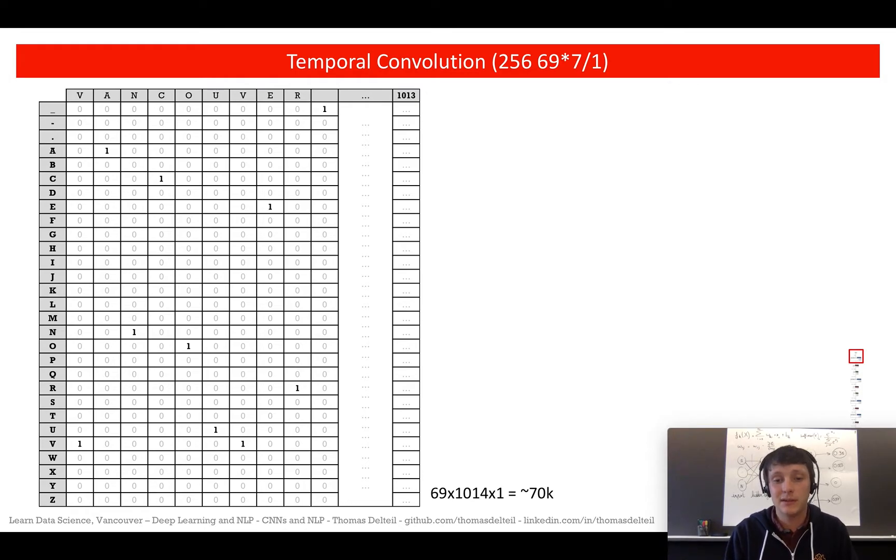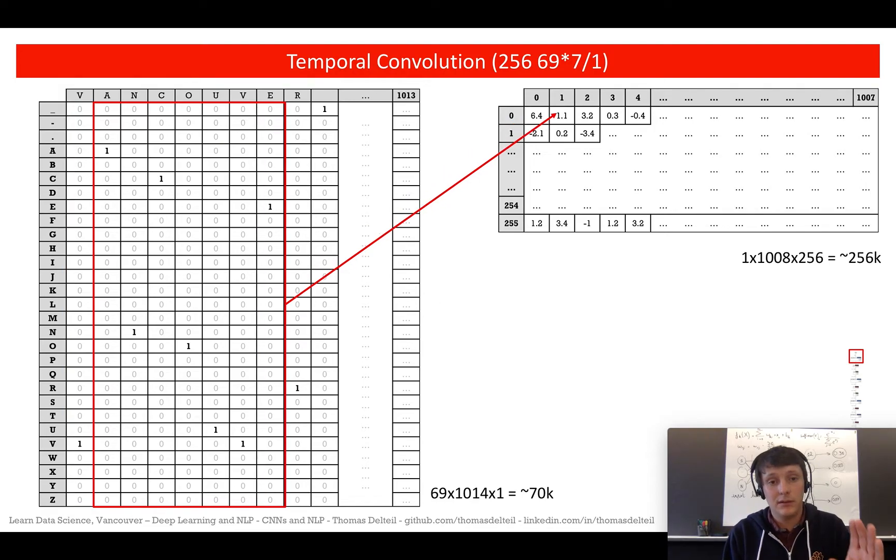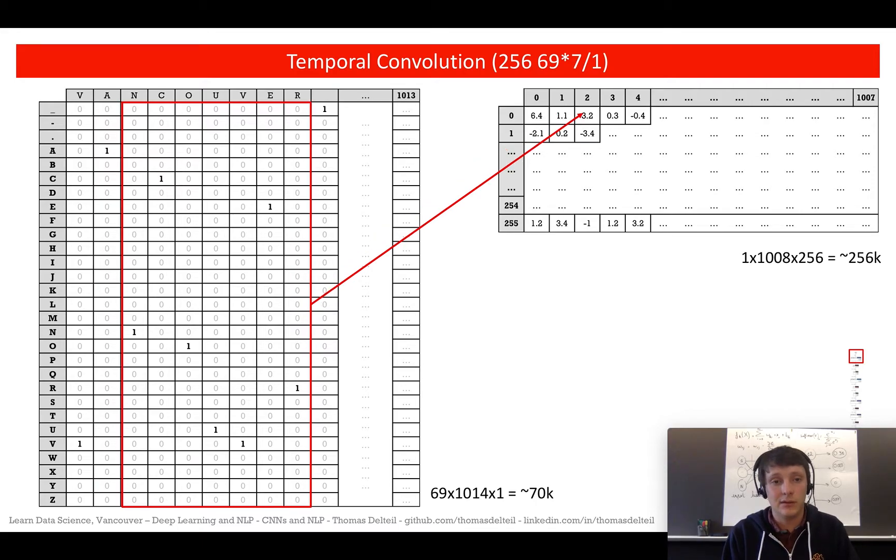In the paper they use an alphabet of size 69 and they have a fixed length for the input of 1014 characters. If it's too short it's padded, if it's too long it's truncated. So what we do is we do a 7 by 69 convolution and we get the result into a feature map which is 1 by 1008. Each mask produces one number. As you can see, you're going to have six elements which are lost because there is no padding here. That's why you go from 1014 elements to 1008.